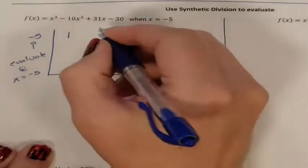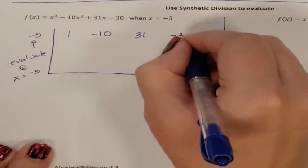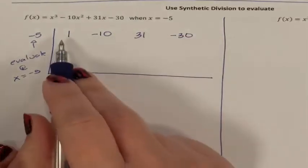So 3, exponent 2, exponent 1, no exponent. So all of the exponents are represented. 3, 2, 1, none.